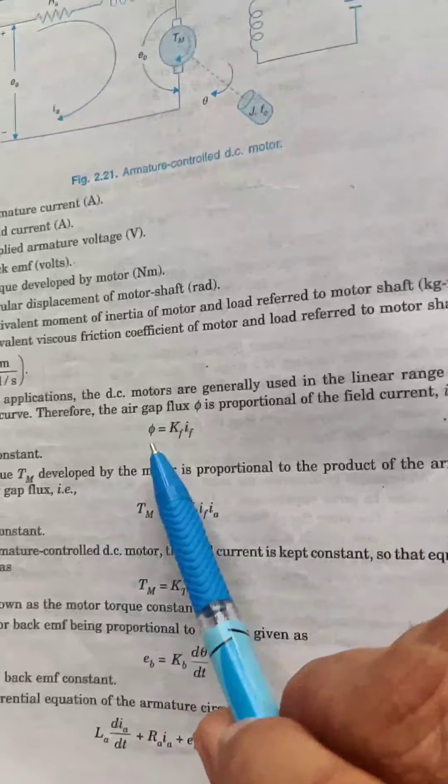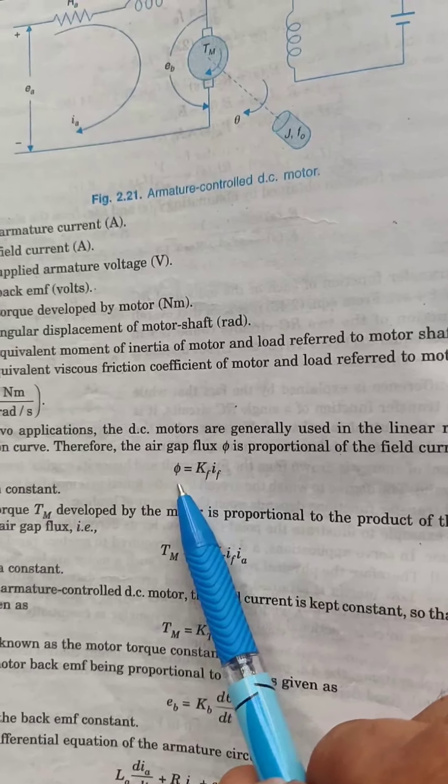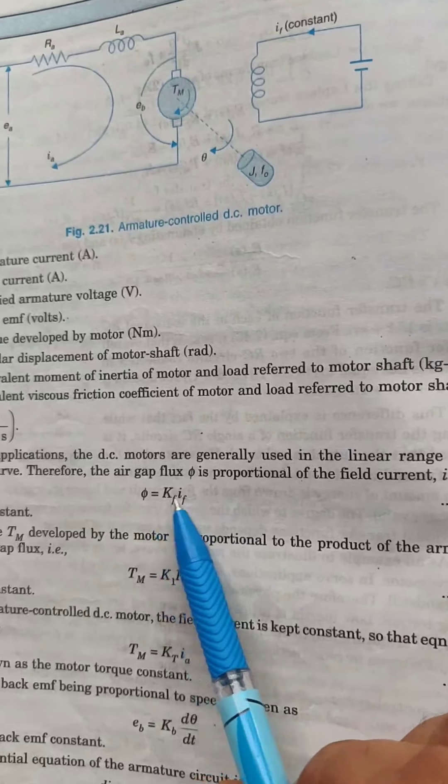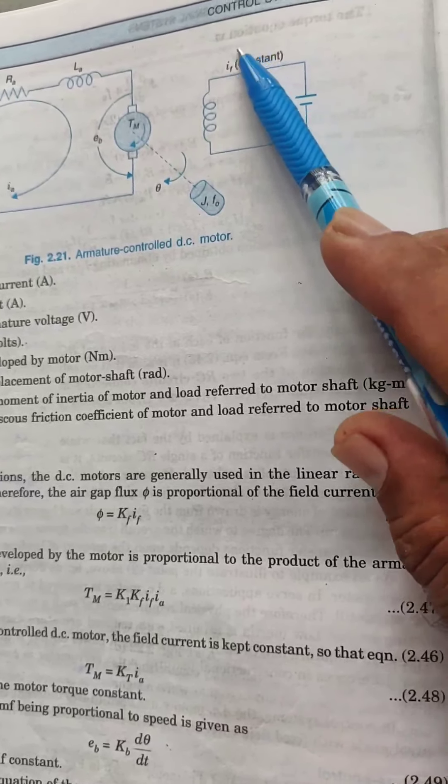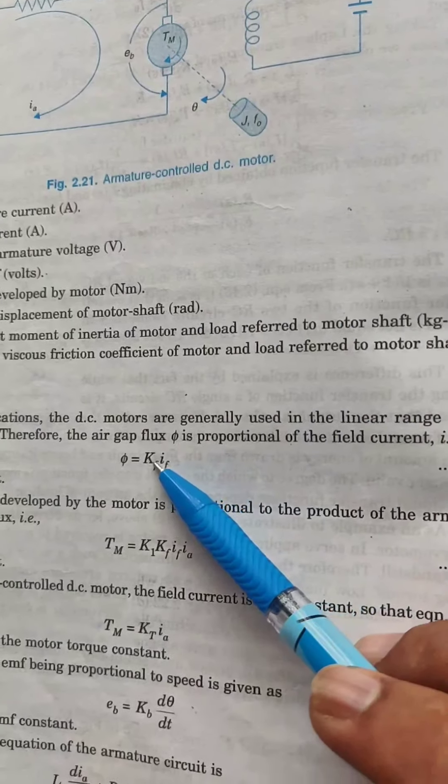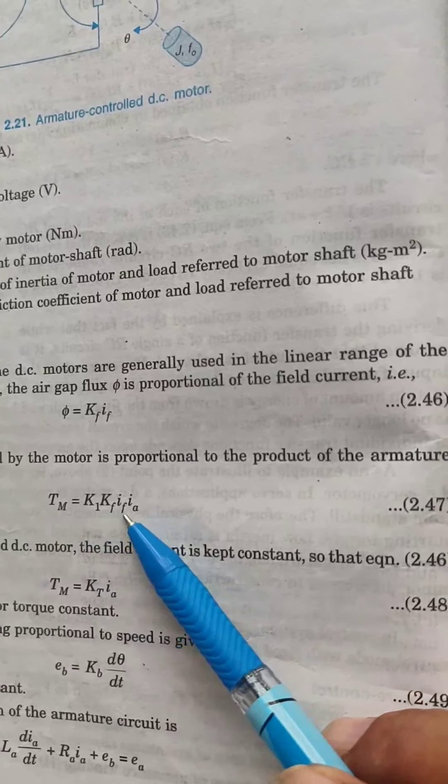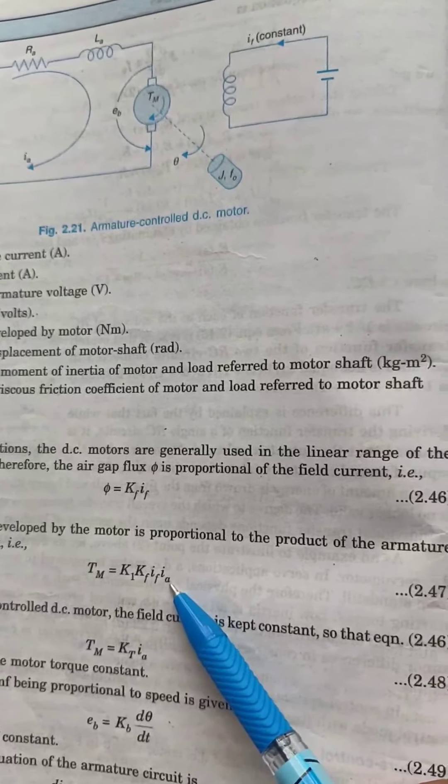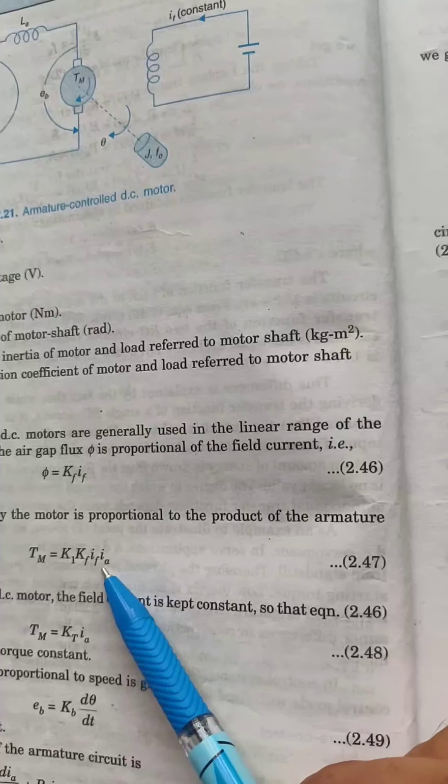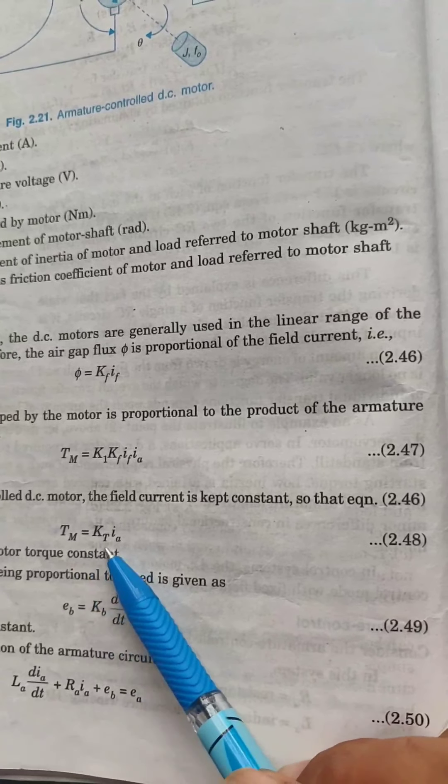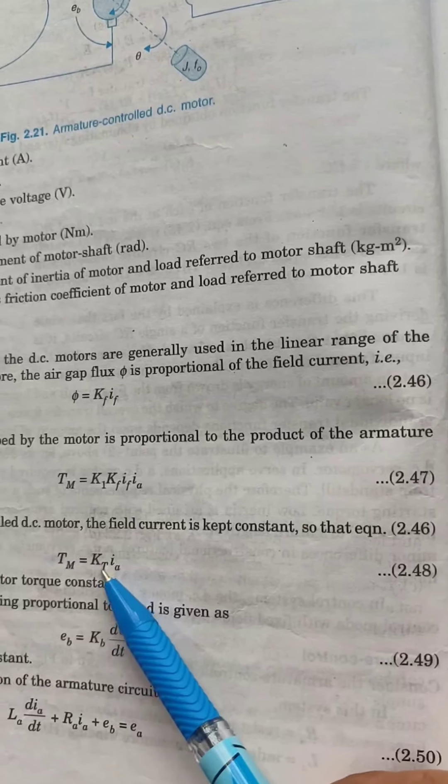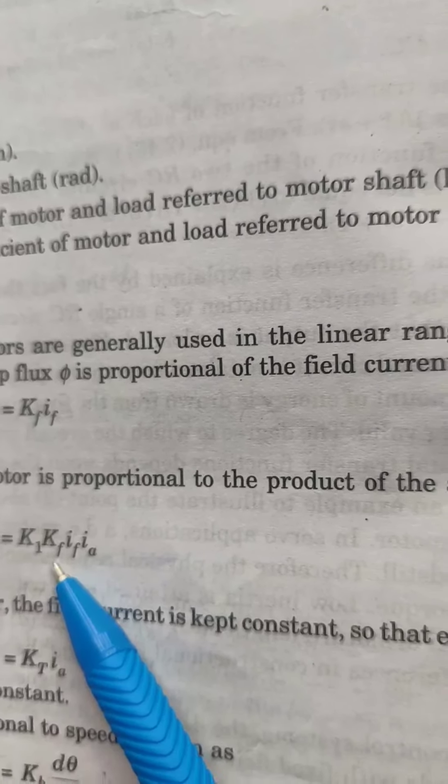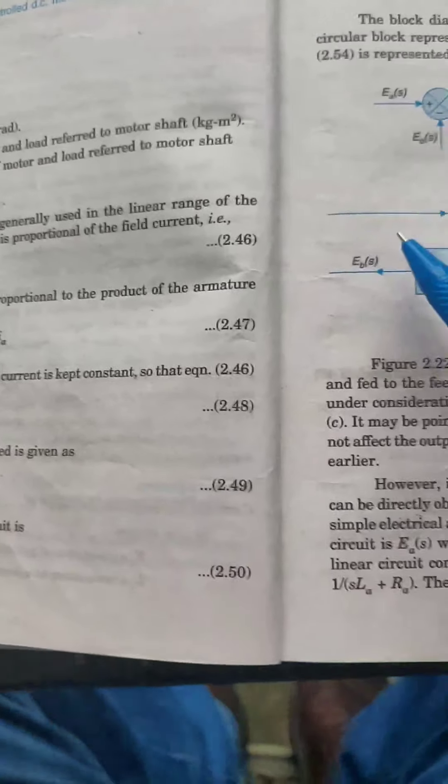As we know, this is flux. Flux in the armature is proportional to the field current. As it is constant, flux is constant because the field current is constant. So TM is directly proportional to field current and armature current. So TM equals K1 KF IF IA, and TM equals KT IA, where KT equals K1 KF IF.